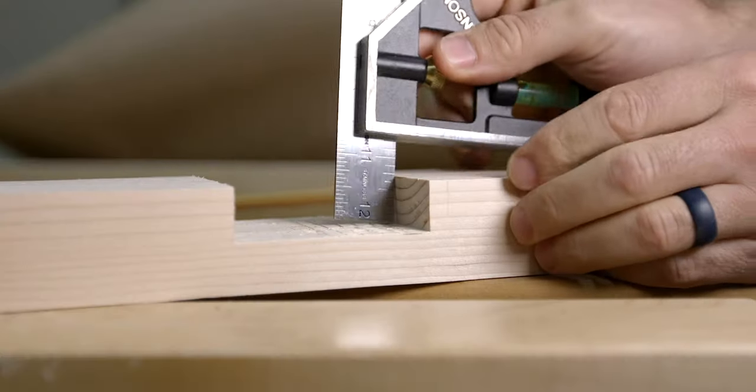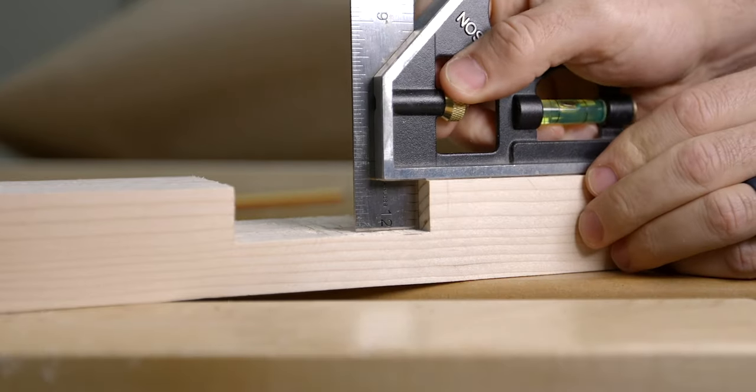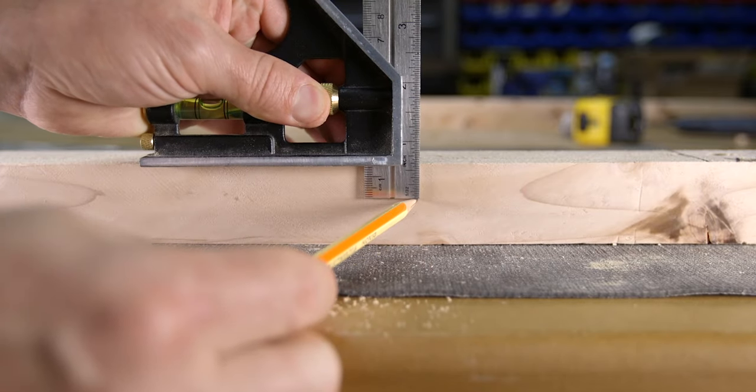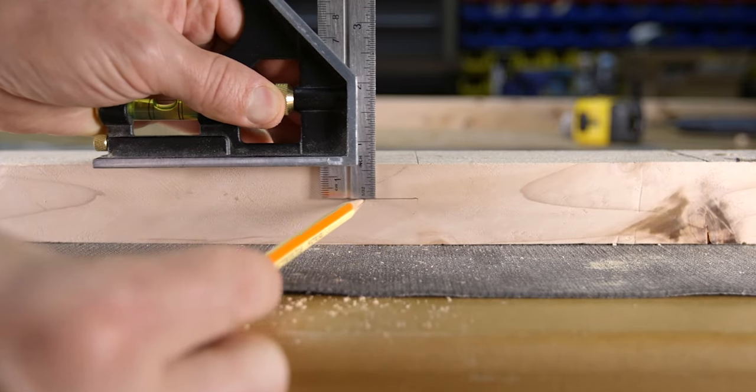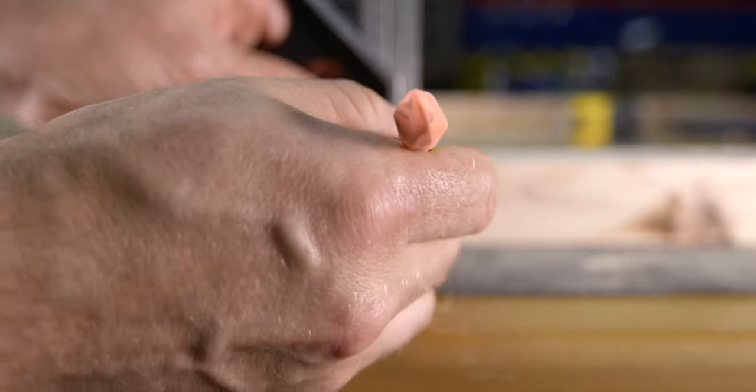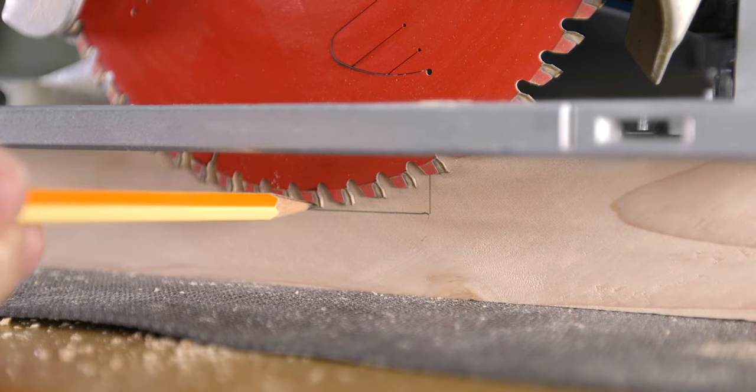The fourth use is a depth gauge. In last week's video, we looked at making notches with a circular saw, and the tool I used to set up the depth and transfer those measurements to the other pieces was the combination square. And that's what makes this tool so great, is that once you set a measurement, it's easy to transfer that measurement to multiple pieces.